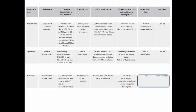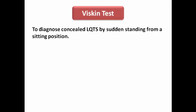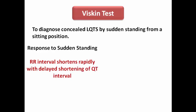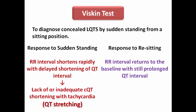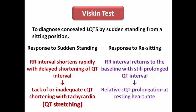Another challenge test is the Veskig test to diagnose concealed long QT syndrome by sudden standing from a sitting position. With sudden standing, the RR interval normally shortens but with a delayed shortening of the QT interval, which is a normal phenomenon exaggerated in long QT syndrome. This results in lack of adequate shortening of the corrected QT interval — called QT stretching — and when the patient resettles, there is still prolonged QT relative to resting heart rate, called QT stunning.